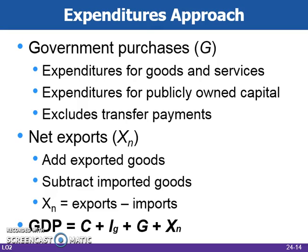Net exports are calculated by subtracting the value of imported goods from the value of exported goods. Adding up all four components provides a measure of GDP — a measure of the market value of a specific year's total output. For the United States in 2015, GDP equaled $17.4 trillion.